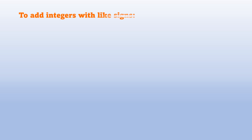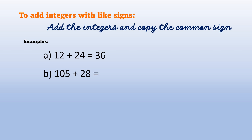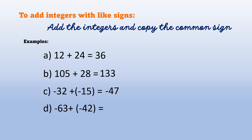To add integers with like signs without algebra tiles: add the integers and copy the common sign. Examples — Example A: positive 12 plus 24 equals 36. Example B: 105 plus 28 equals 133. Example C: negative 32 plus quantity negative 15 is equal to negative 47. Example D: negative 63 plus negative 42 is equal to negative 105.